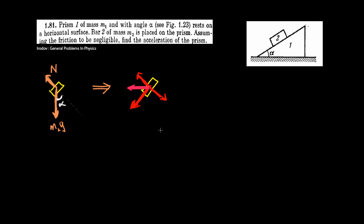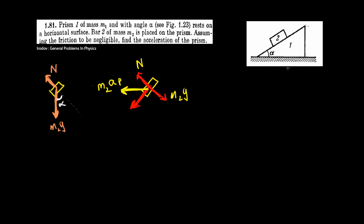That pseudoforce will be equal to the mass of the bar, which is m2, times the acceleration of the prism — I'll call that AP. And there's this normal force here. If I break the gravitational force m2g into two parts, then one part is m2g cosine of alpha, and the other part is m2g times sine of alpha. We are done with the free body diagram of the bar.